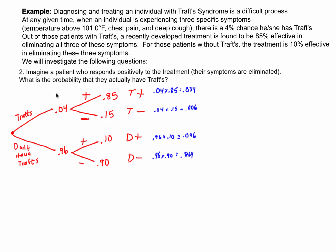For this second part, imagine a patient who responds positively to the treatment — their symptoms are eliminated. What's the probability that they actually had Traff's syndrome? This is a very commonly missed problem, not only by statistics students but by those in the medical profession and doctors included. The common mistake is to say there was an 85% chance they had it, or to say only a 4% chance because that's the base rate. To avoid these errors, I want to create a brief table using frequencies, assuming we are talking about 1,000 people.